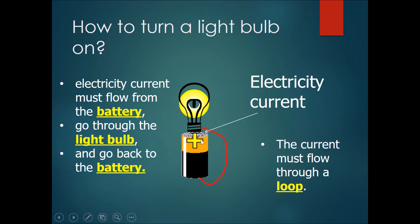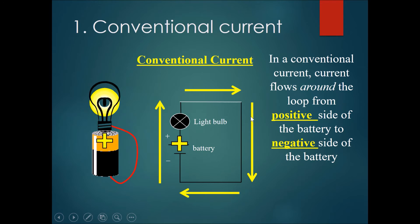Let's take a look. Current flows up through the light bulb and then to the other side of the battery. This will be called conventional current. In conventional current, current flows around the loop from the positive side of the battery to the negative side of the battery.